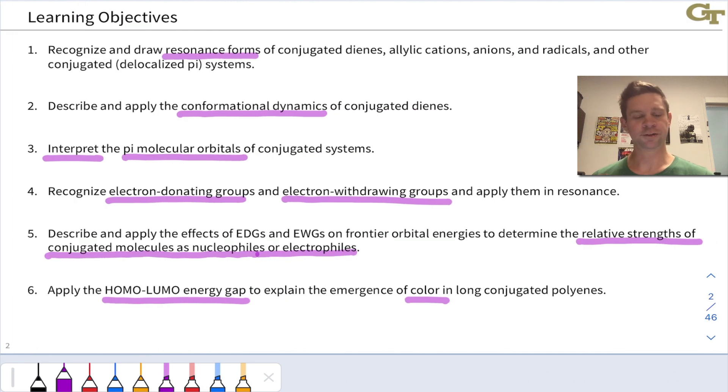Our learning objectives for this unit: first of all, we're focused on drawing and recognizing resonance forms of conjugated systems, including dienes,